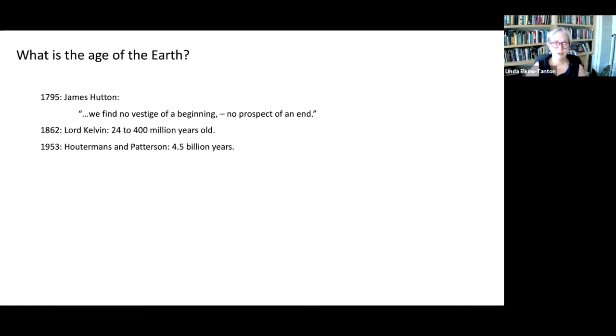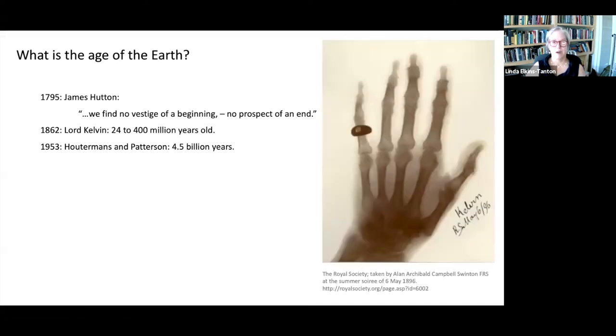And now in 1862, around about different years, Lord Kelvin made several estimates of the age of the earth between 24 and about 400 million years old. And he was trying to calculate from heat loss, how old the earth must have been. And then a century later in 1953, Hatterman's and Patterson got an age of 4.5 billion years. So what happened in between 1862 and 1953 that completely changed our conception of the age of the earth? And that was the discovery of radioactivity.